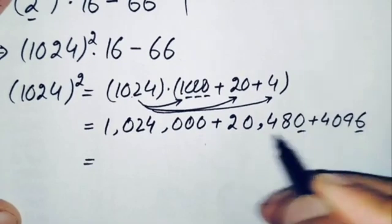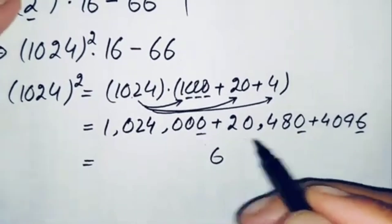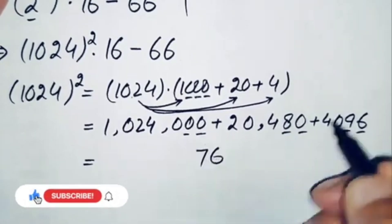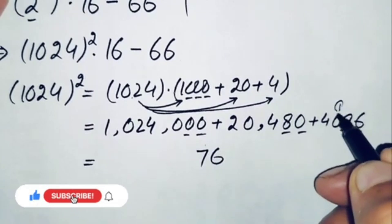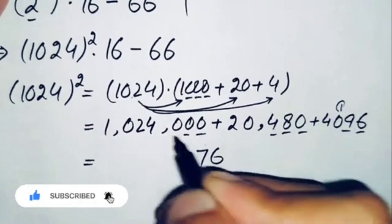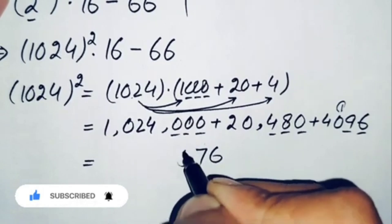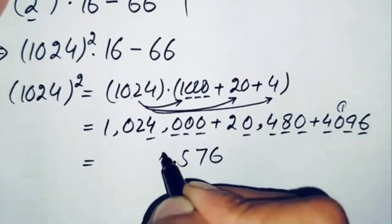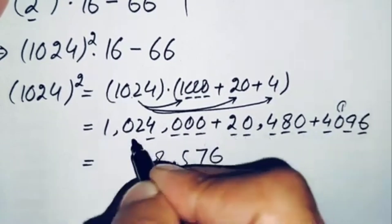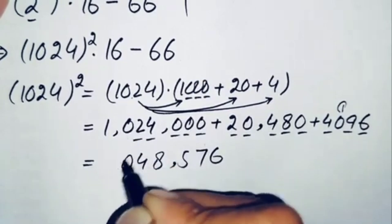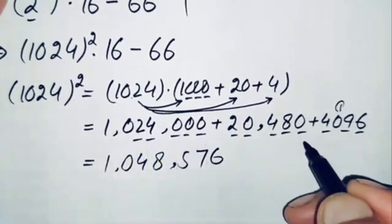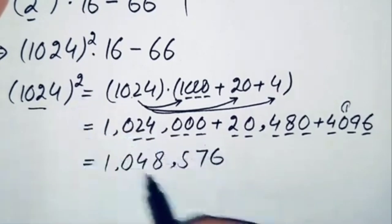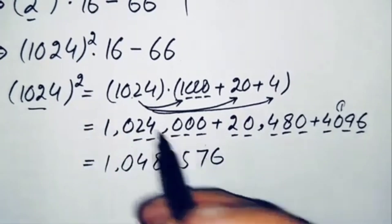Now we will add all three numbers: 1,024,000 plus 20,480 plus 4,096. Adding from the ones position: 6 plus 0 plus 0 is 6; 9 plus 8 is 17, write 7 carry 1; 0 plus 4 plus 1 is 5; 4 plus 0 is 4; 2 plus 2 is 4; 0 plus 0 is 0; 1. So the value of 1024 whole squared is one million forty-eight thousand five hundred seventy-six.